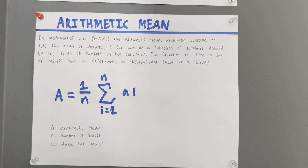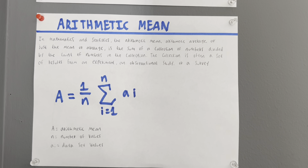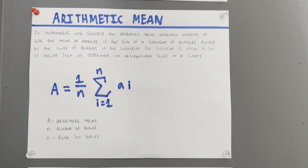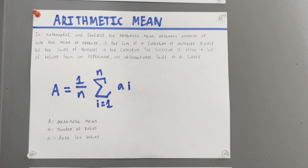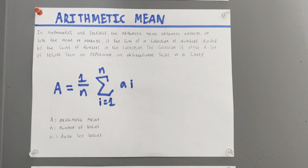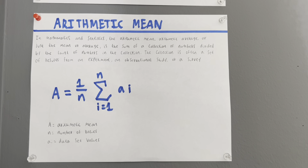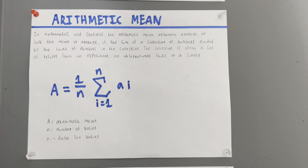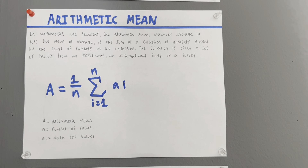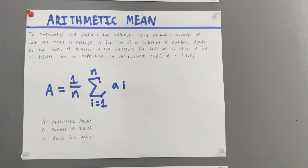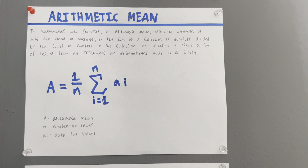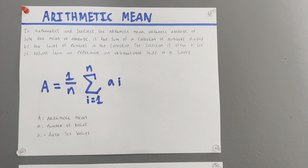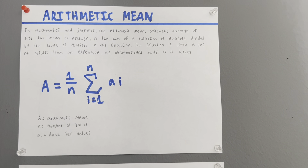Hi everyone, Angel the mathematician from Garcia Academy, and today we're going to talk about the arithmetic mean. In mathematics and statistics, the arithmetic mean — arithmetic average, or just mean or average — is the sum of a collection of numbers divided by the count of numbers in the collection. The collection is often a set of results from an experiment.